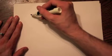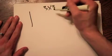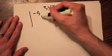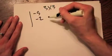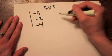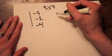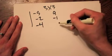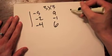Let's start with a 3 by 3 matrix. Let's go negative 5, negative 2, negative 4, 9, negative 1, 6.